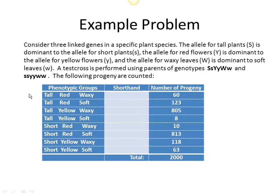It can be any three genes — the important part is that the cross already started with one parent that was a triple heterozygote for all three genes, and one parent that is completely recessive. That's why it's called a test cross. Those two parents are mated, we get seeds, plant them, and when the offspring grow up we assess whether they're tall or short, have red or yellow flowers, and waxy or soft leaves.